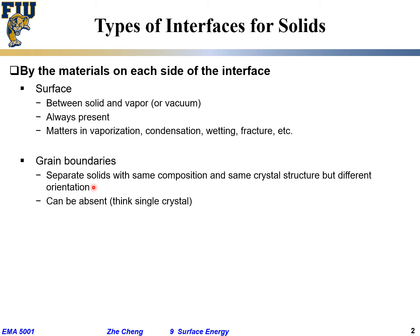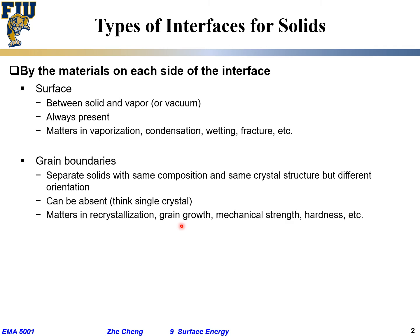Unlike surface, grain boundaries can be absent. For example, a single crystal diamond, or single crystal cubic zirconia, or silicon chips — quite often you are dealing with single crystal silicon, and along the entire material you don't find a single grain boundary. So grain boundaries can be absent if you are dealing with single crystal material. But single crystal material still always has surfaces — no matter how big your single crystal is, you cannot avoid the surface.